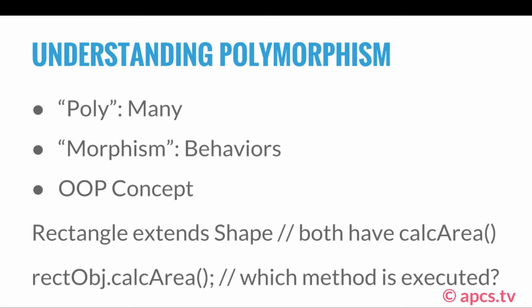Is the calcArea method in the Shape class executed, or is the calcArea method in the Rectangle class executed? This is exactly where polymorphism plays in, because there's one method but it has multiple behaviors. There's one method — calcArea — but it has two different behaviors: one behavior based on what's in the Rectangle class, and the other based on what's in the Shape class.